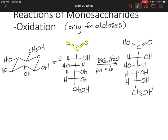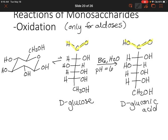Let's highlight the carboxylic acid at the top just to show what changed. Our monosaccharide is D-glucose, and our product here is called D-gluconic acid. This is also referred to as an aldonic acid.